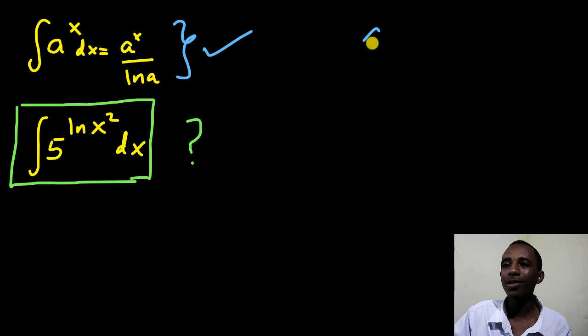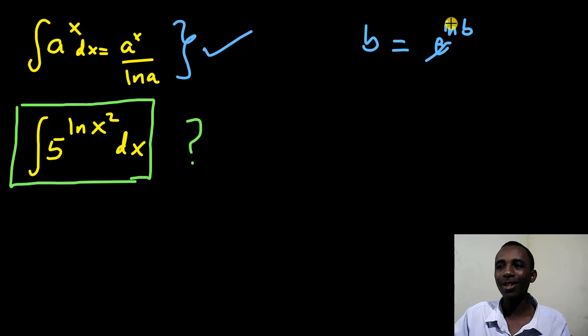If I have some number, for example b, this is the same as saying exponent of the natural log of b, because the exponent is the anti-logarithm of the natural log. So the exponent and the natural log would simply cancel out, and you would end up with the original number b. So that's the first thing we need to know.